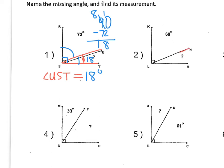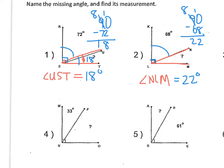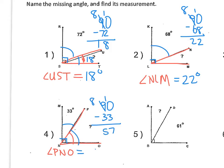The next missing angle is N-L-M. We can see it makes a 90 degree angle there. So if this is 68, we do 90 minus 68 to find how many degrees are left over for the other angle. That means N-L-M is 22 degrees. The next missing angle is P-N-O, and it makes a 90 degree angle here. So 90 minus 33 gives us 57 degrees for that angle.